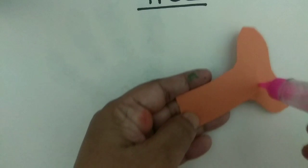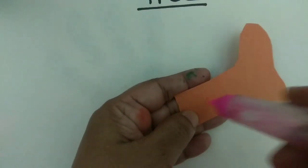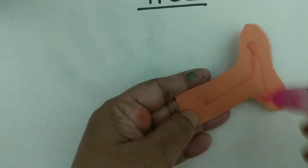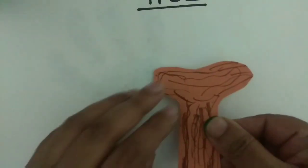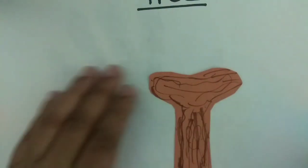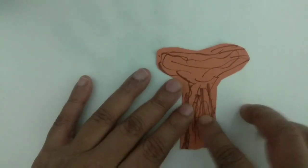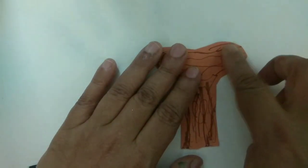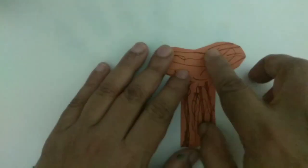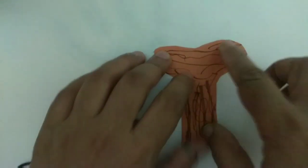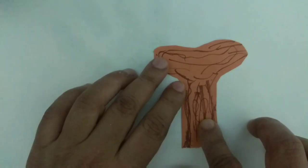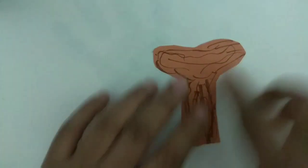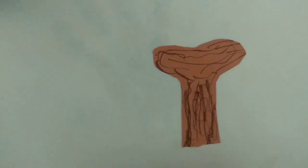I will apply glue. And I will stick letter T trunk. The tree trunk that I made is in the shape of letter T. I have stuck it.